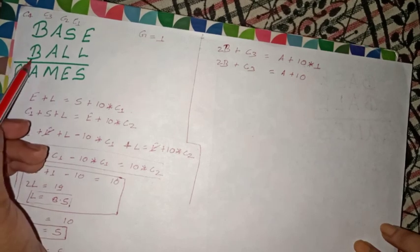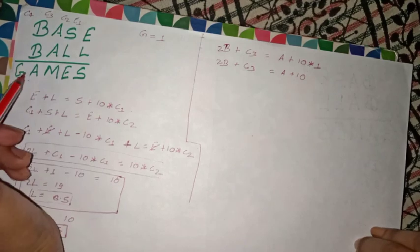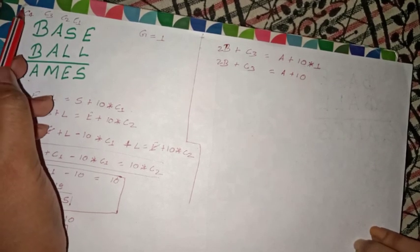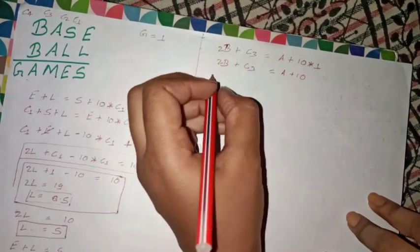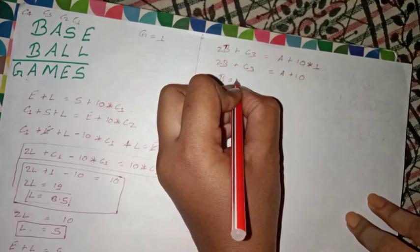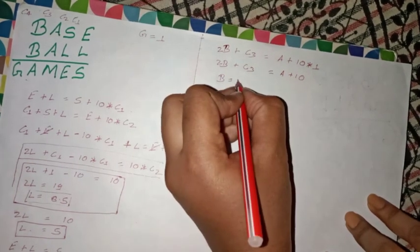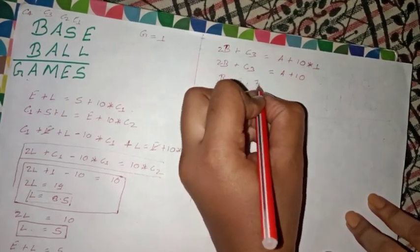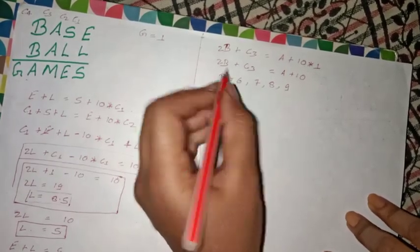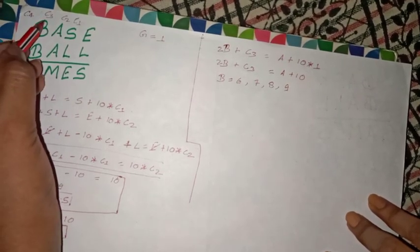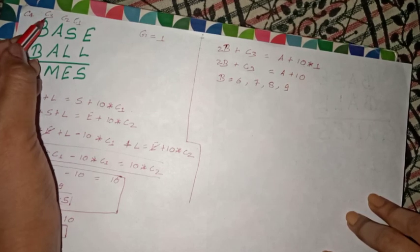If we assume maximum value 4, we get 4 plus 4 plus maximum carry 1, giving A equal to 9, so no carry is generated. B equal to 4 or less is not possible. So B can be 5—but no, because L is already 5.